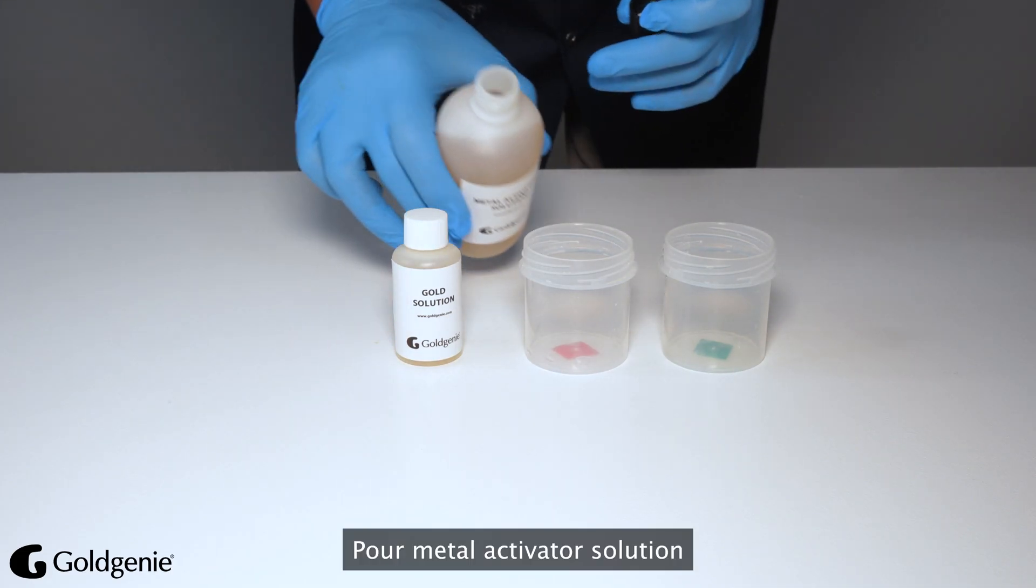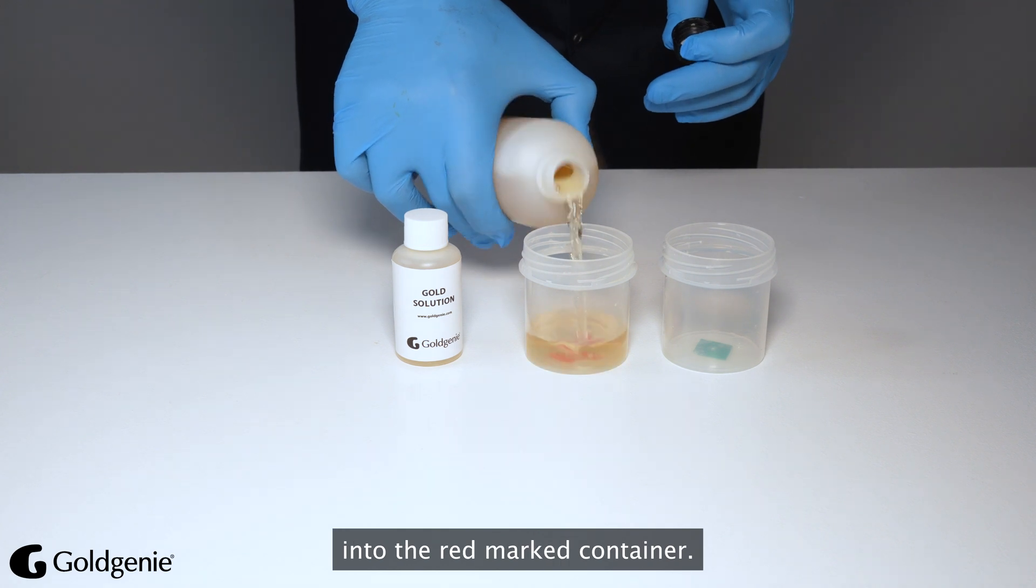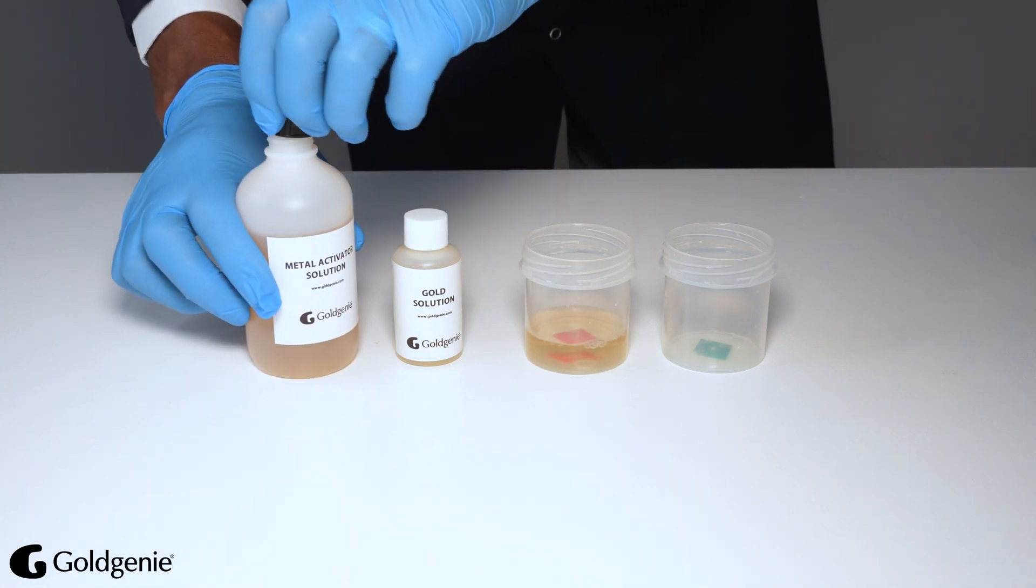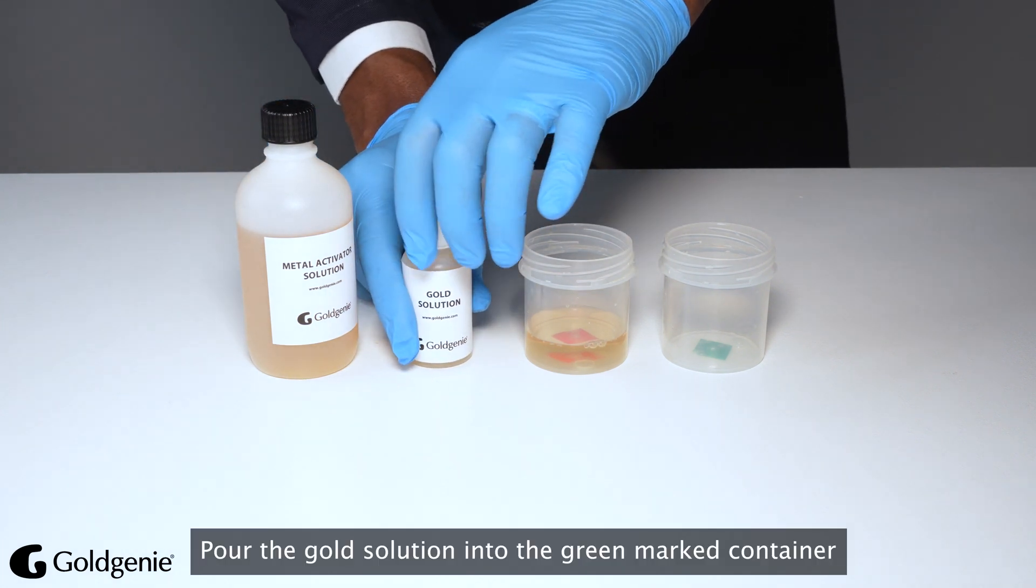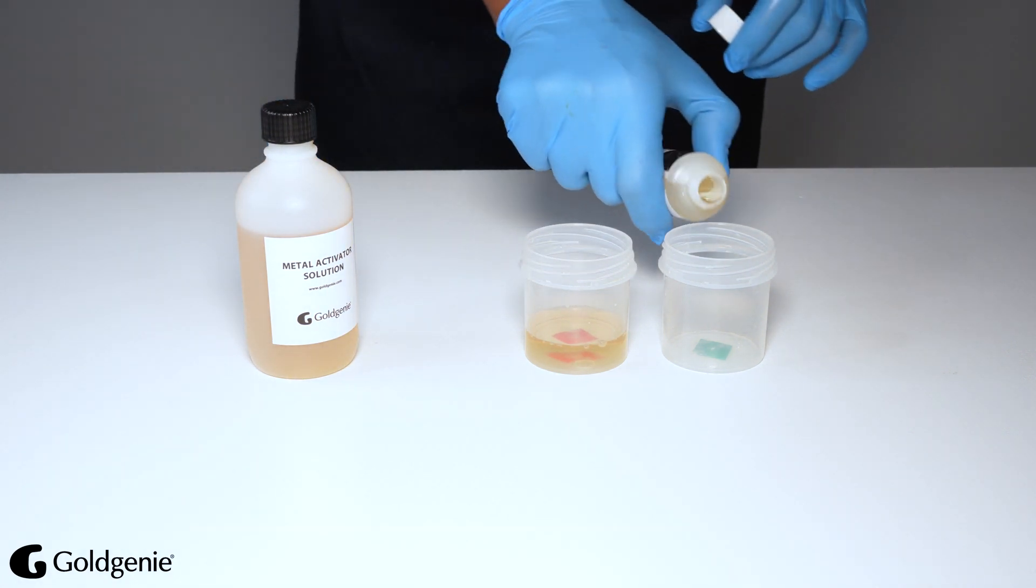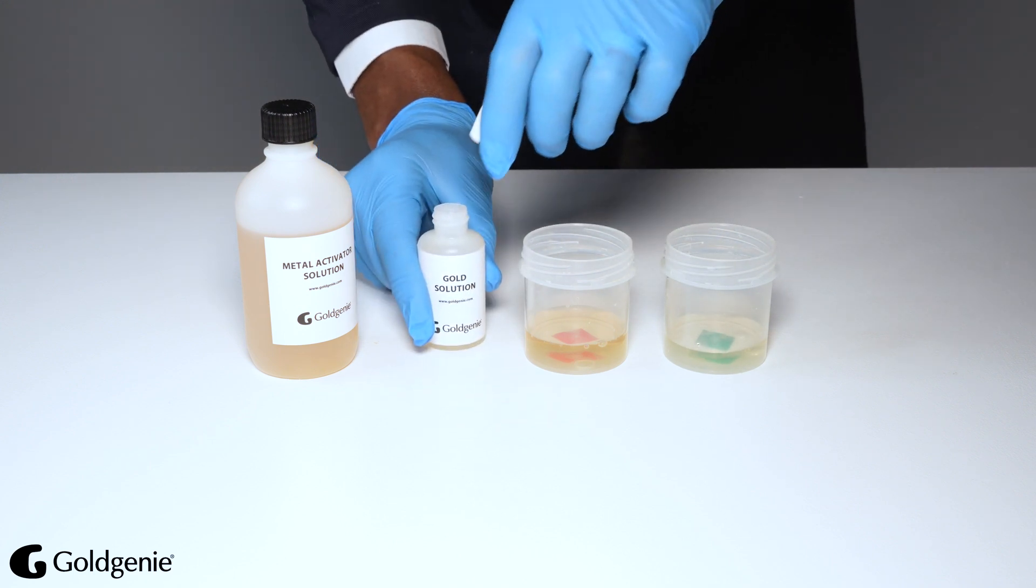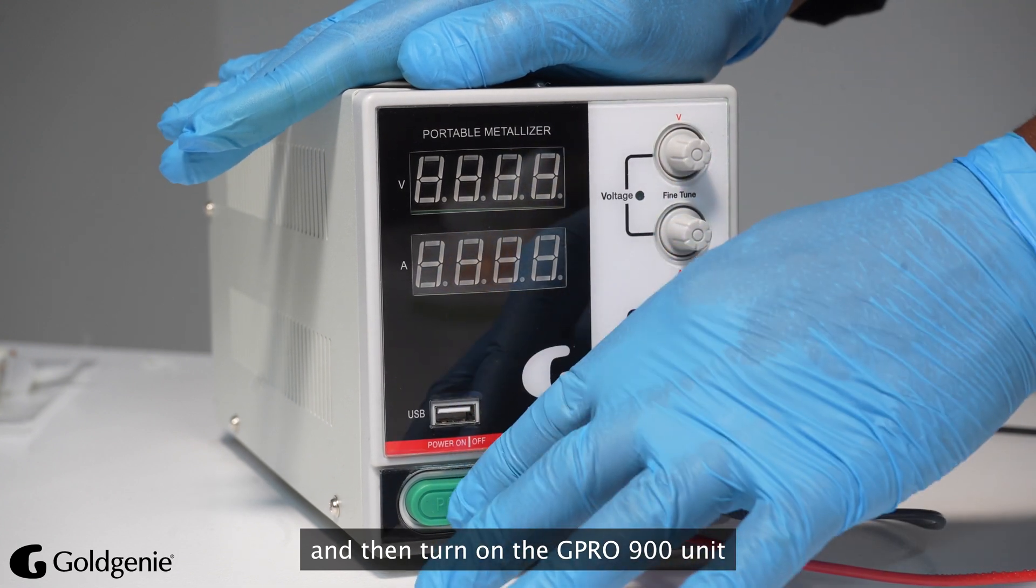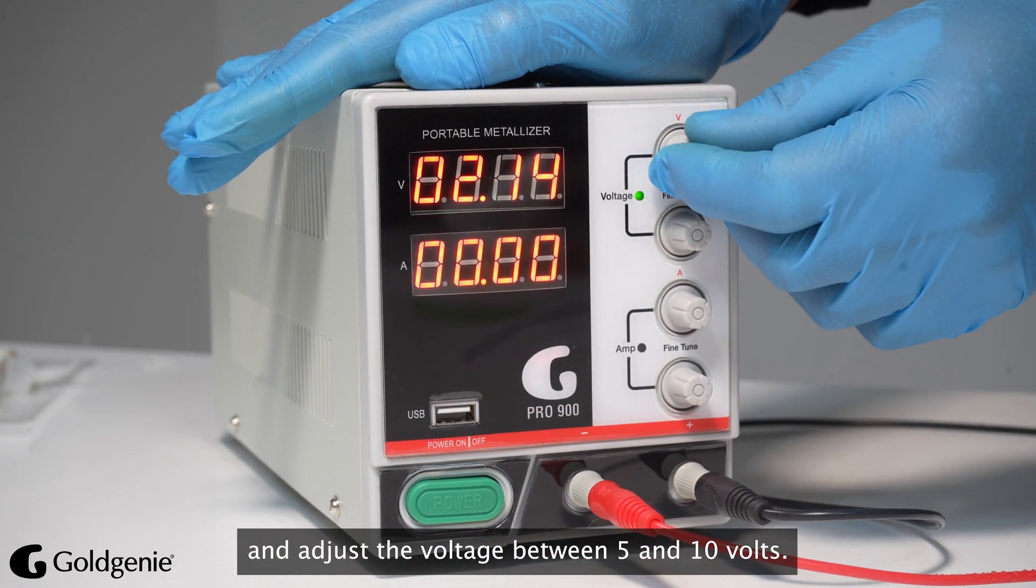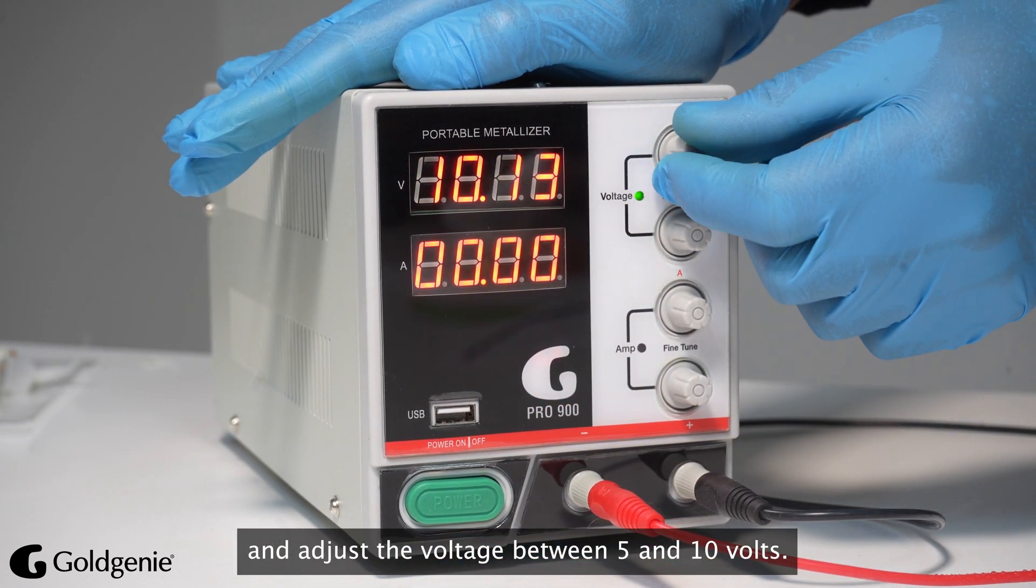Pour Metal Activator Solution into the Red Marked Container. Pour the Gold Solution into the Green Marked Container. Then turn on the G Pro 900 Unit and adjust the voltage between 5 and 10 Volts.